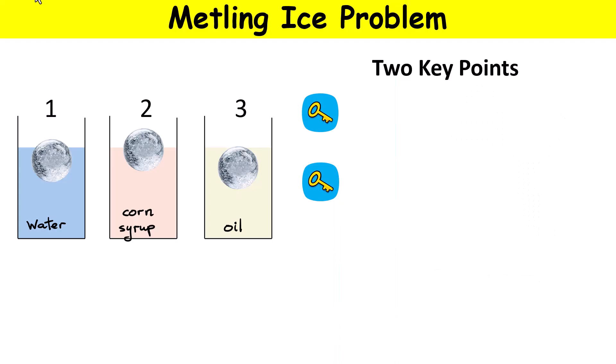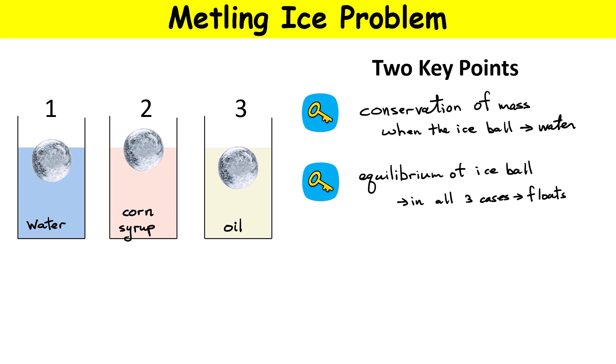To understand this problem we need to look at two key points. The first is conservation of mass — whatever mass the ice ball has, when it melts it converts to a volume of water with the same mass, because we're not changing the number of water molecules. The other key point is that in all three cases the ice ball floats.